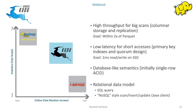Kudu tables look much like those in SQL relational databases, acting as a storage system for structured data following RDBMS principles. Primary keys are made up of one or more columns that enforce uniqueness and act as an index for efficient updates and deletes, serving as a storage system for tables of structured data.